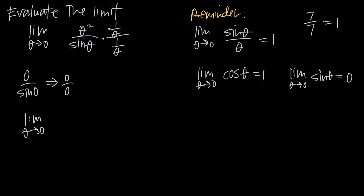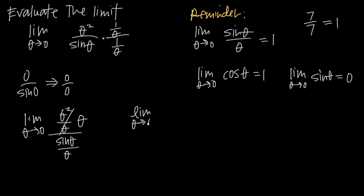When we do that, we multiply across our numerators: theta squared times 1 over theta gives us theta squared over theta. In the denominator, sine of theta times 1 over theta gives us sine of theta divided by theta. In our numerator, theta squared divided by theta reduces to just theta. Now, when taking the limit of a fraction, we can take the limit of the numerator and denominator separately — so we take the limit as theta goes to 0 of theta, divided by the limit as theta goes to 0 of sine theta over theta.